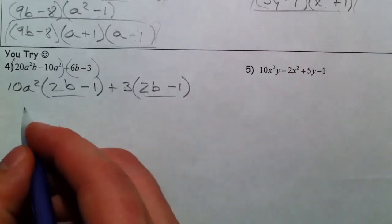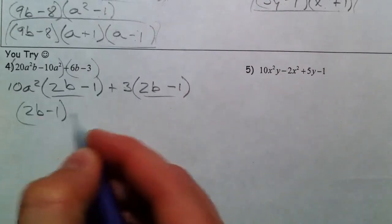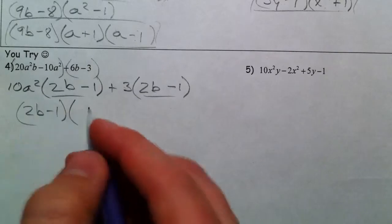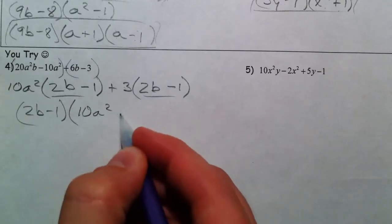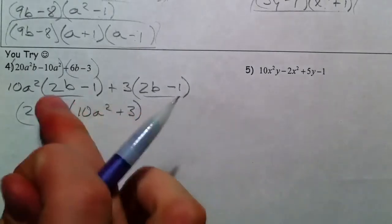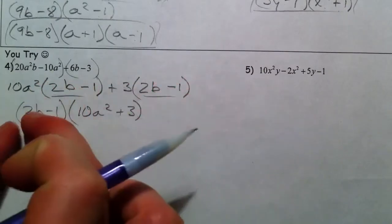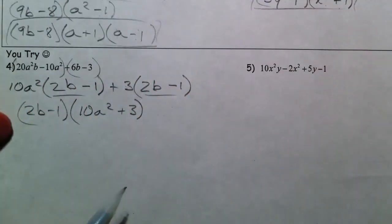So they have this 2b minus 1 in common. And it leaves 10a squared plus 3. Remember, we're factoring out the 2b minus 1. Those have to be the same to be able to write them out in front.